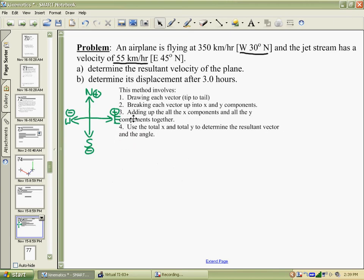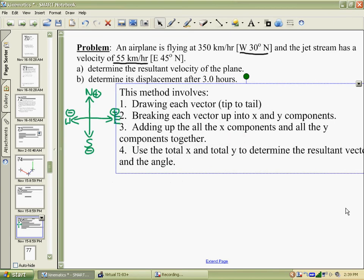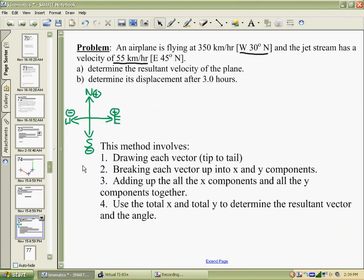Our method involves drawing the vectors tip to tail, then breaking each vector up into x and y components. Once you do that, you can treat the x and y components independently. So we will add up all the x components, or subtract them, and then deal with the y components separately. Once you've treated all the x and y components for all your vectors separately, then you can use the total x and the total y to get a resultant vector when everything's done.